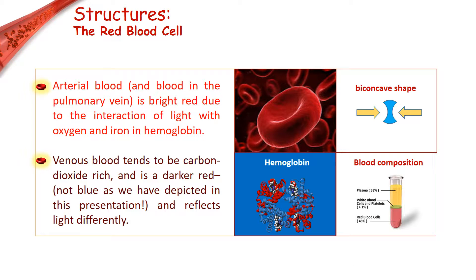The main function of red blood cells is to transport oxygen to the body's cells and deliver carbon dioxide to the lungs. The protein inside the red blood cells is called hemoglobin, which carries oxygen. The unique shape of the red blood cell makes it easy for them to maneuver through tiny blood vessels to deliver oxygen to the tissues and organs.